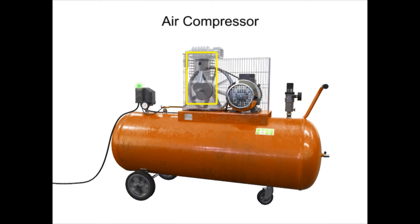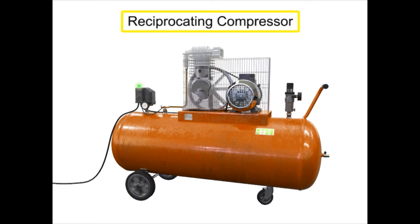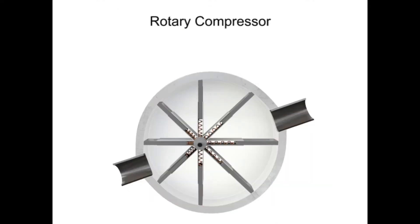Compressors with a piston as the compressing element are called reciprocating compressors. Compressors can also be made with vanes or impellers. These types of compressors are called rotary compressors.